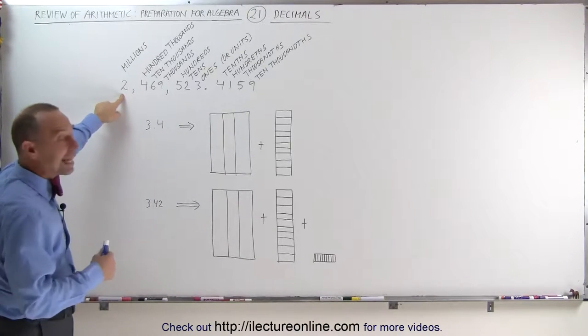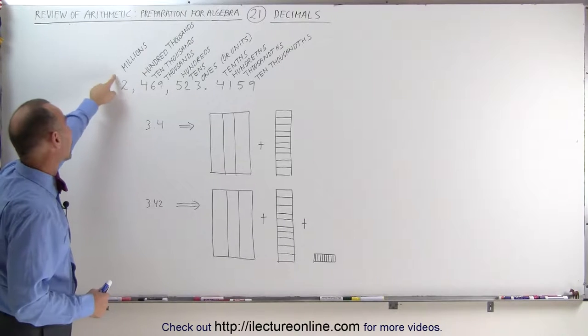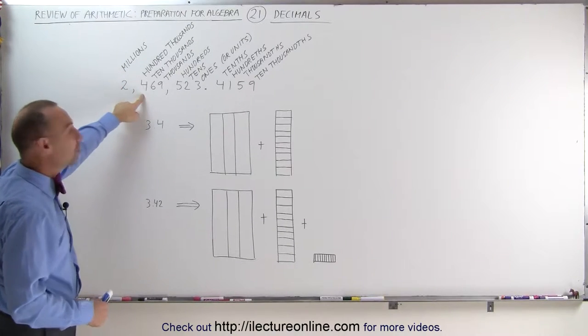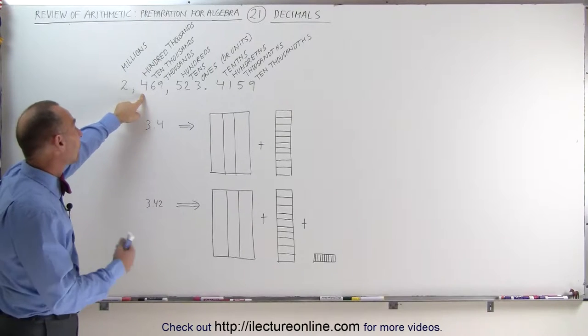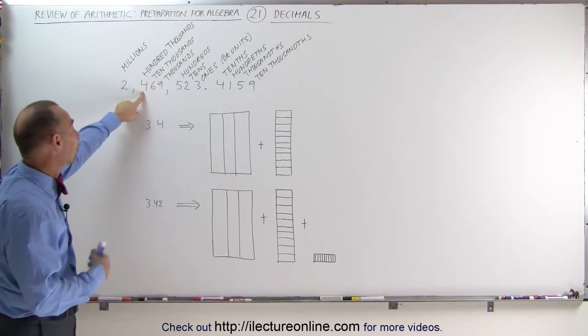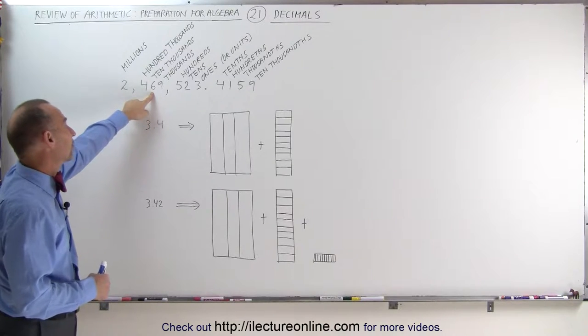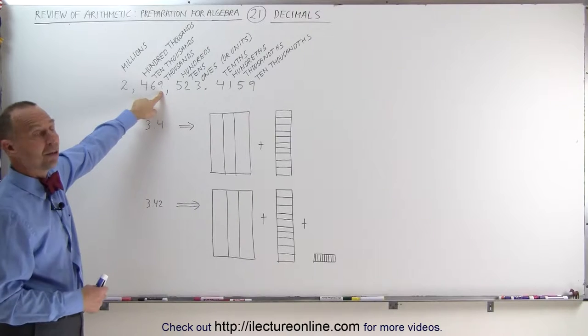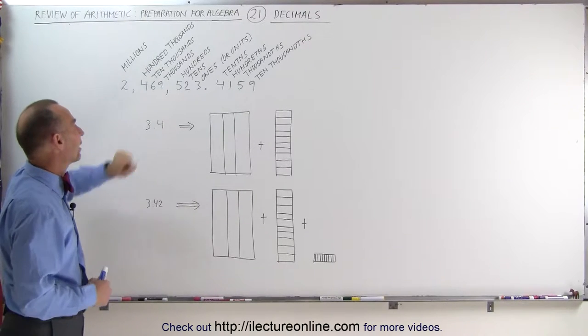The first number here indicates how many millions you have. Two of them, so we have 2 million. This number represents how many hundred thousands you have. You have 4 of them, so this is 4 times 100,000 or 400,000. This number tells you how many ten thousands you have. There's 6 of them. And this number represents how many thousands you have. There's 9 of them.